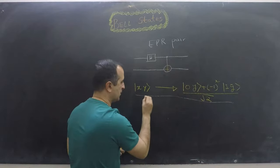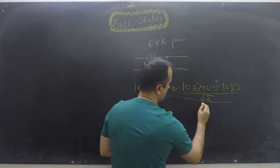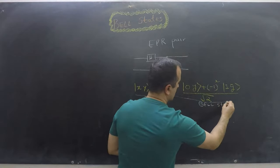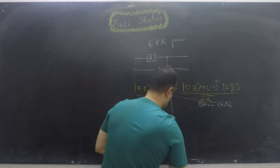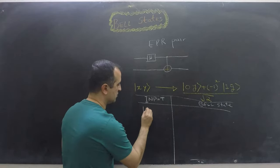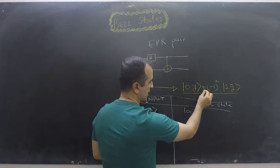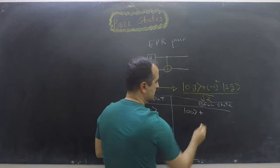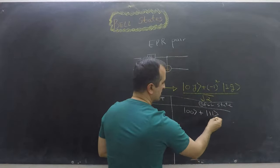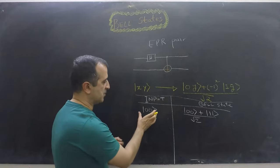Let's say I will have my input here and my Bell state, or the output of the circuit, here. If my input is |00⟩, my output is going to be |00⟩, and because x is 0 this sign remains positive. So I will have plus |11⟩ — because y is 0, y complement is 1 — divided by square root of 2. That's my output if my input is |00⟩.